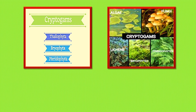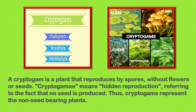Cryptogams are non-flowering plants divided into three groups: thallophyta, bryophyta, and pteridophyta. A cryptogam is a plant that reproduces by spores — it doesn't have a male and female; it just reproduces by spores without flowers or seeds. Cryptogamia means hidden reproduction, referring to the fact that there is no seed, so we can't see any reproduction. Cryptogams are therefore the non-seed-bearing plants.